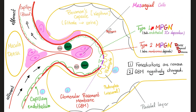In membranoproliferative glomerulonephritis — called membranoso because it affects the membrane — we have two subtypes: type 1 and type 2. Type 1 shows subendothelial immune complex deposits, very similar to diffuse proliferative. But type 2 has antibodies that go into the membrane itself — intramembranous deposits. That's why type 2 is called dense deposit disease: the deposits are immune complexes inside the glomerular basement membrane.